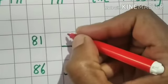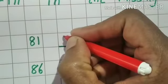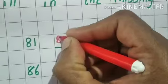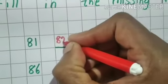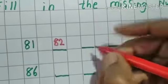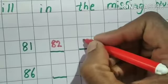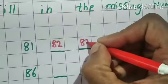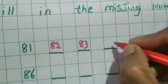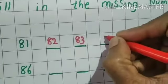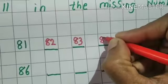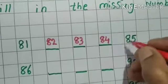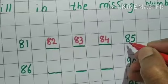81, children — what will come after 81? 82, 83, 84, and then will come 85.